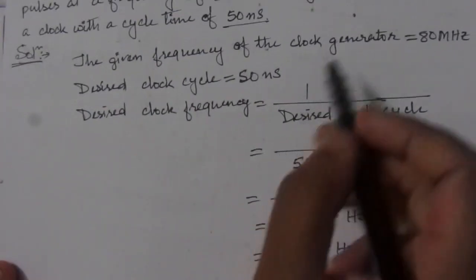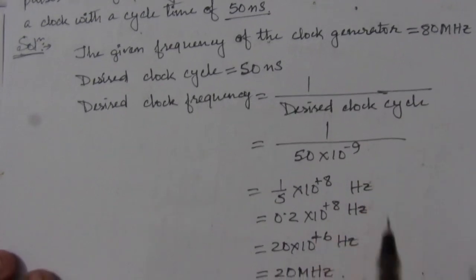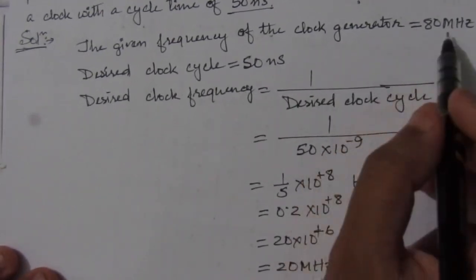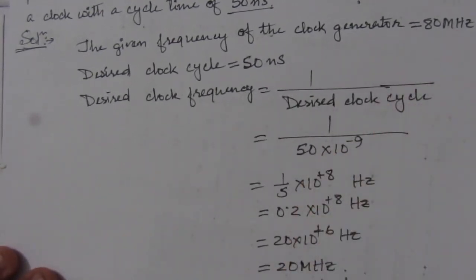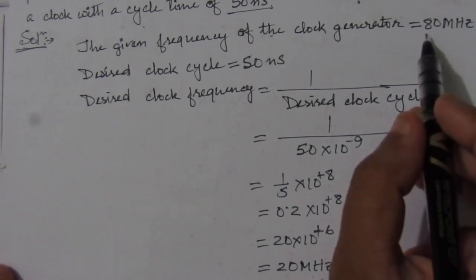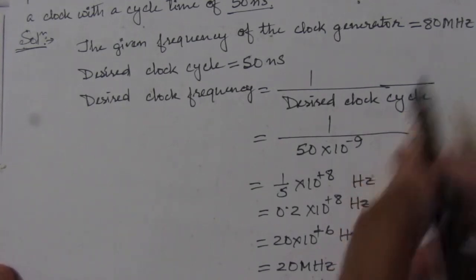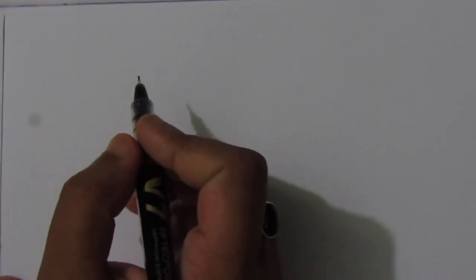We are given a clock generator of 80 MHz and need to produce 20 MHz. That means we have to divide the given clock frequency by 4. So here we can use 2 T flip-flops for this design.